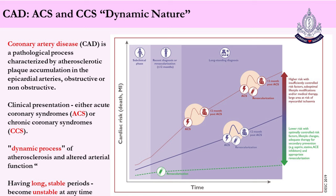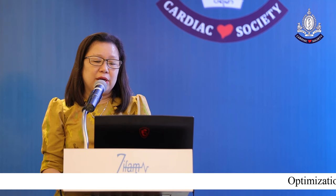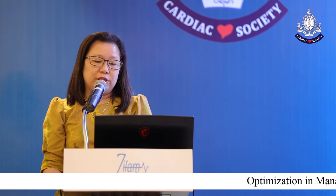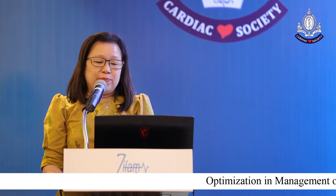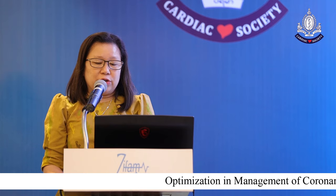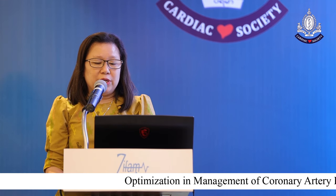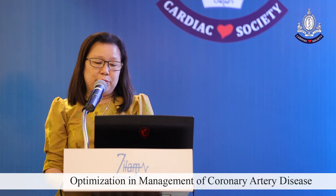What is coronary artery disease? It is a pathological process characterized by atherosclerotic plaque accumulation in the epicardial arteries. It can be obstructive or non-obstructive, and the clinical presentation may be either acute coronary syndrome or chronic coronary syndrome. It is a dynamic process of atherosclerosis and altered arterial function with a long stable course. In between, it can become unstable any time and present with acute coronary syndrome, especially in high-risk patients with poor risk factor control, suboptimal lifestyle modification, or poor medical therapy control.